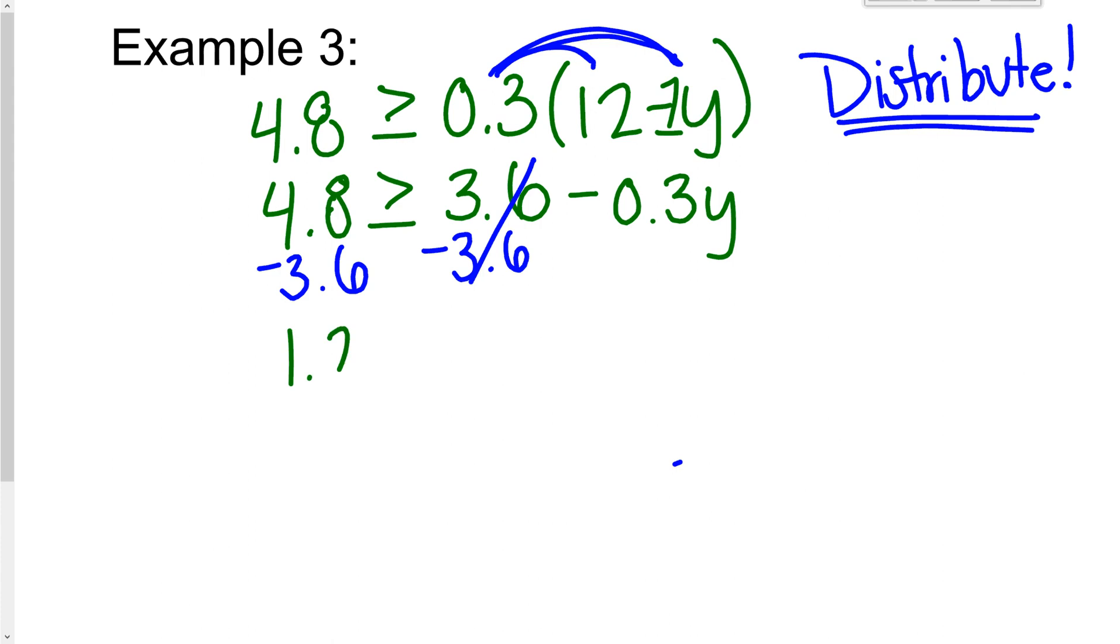So 1.2 is greater than or equal to negative 0.3y. So I divide each side by negative 0.3.